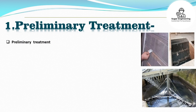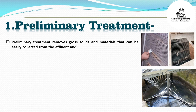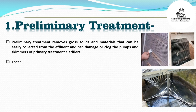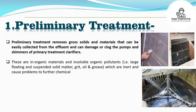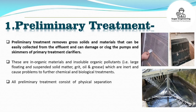Preliminary treatment removes gross solids and materials that can be easily collected from the effluent and can damage or clog the pumps and skimmers of primary treatment clarifiers. These are inorganic materials and insoluble organic pollutants — large floating and suspended solid matter, grit, oil and grease — which are inert and cause problems to further chemical and biological treatments. All preliminary treatment consists of physical separation techniques by controlling flow rate of effluent.